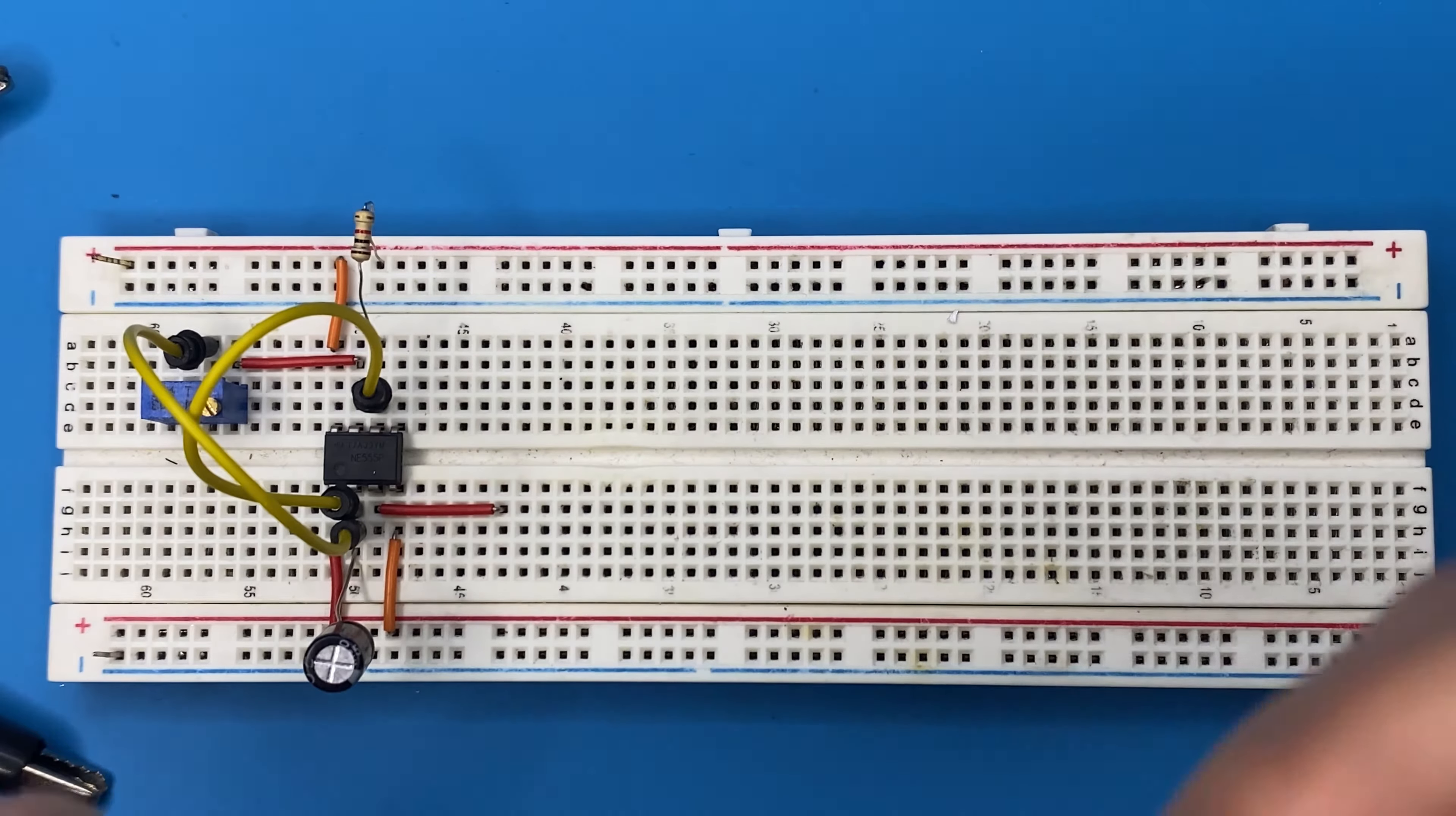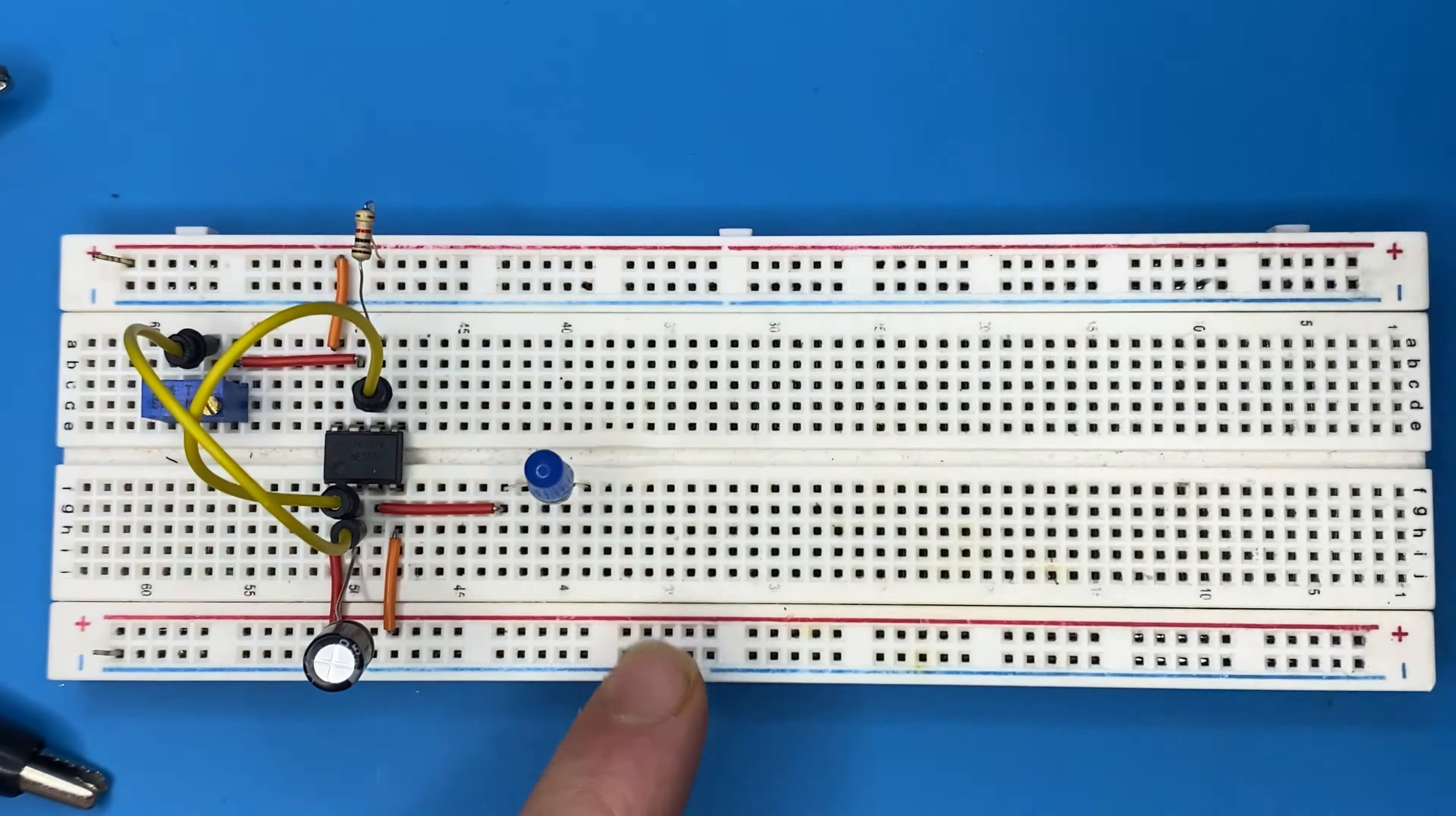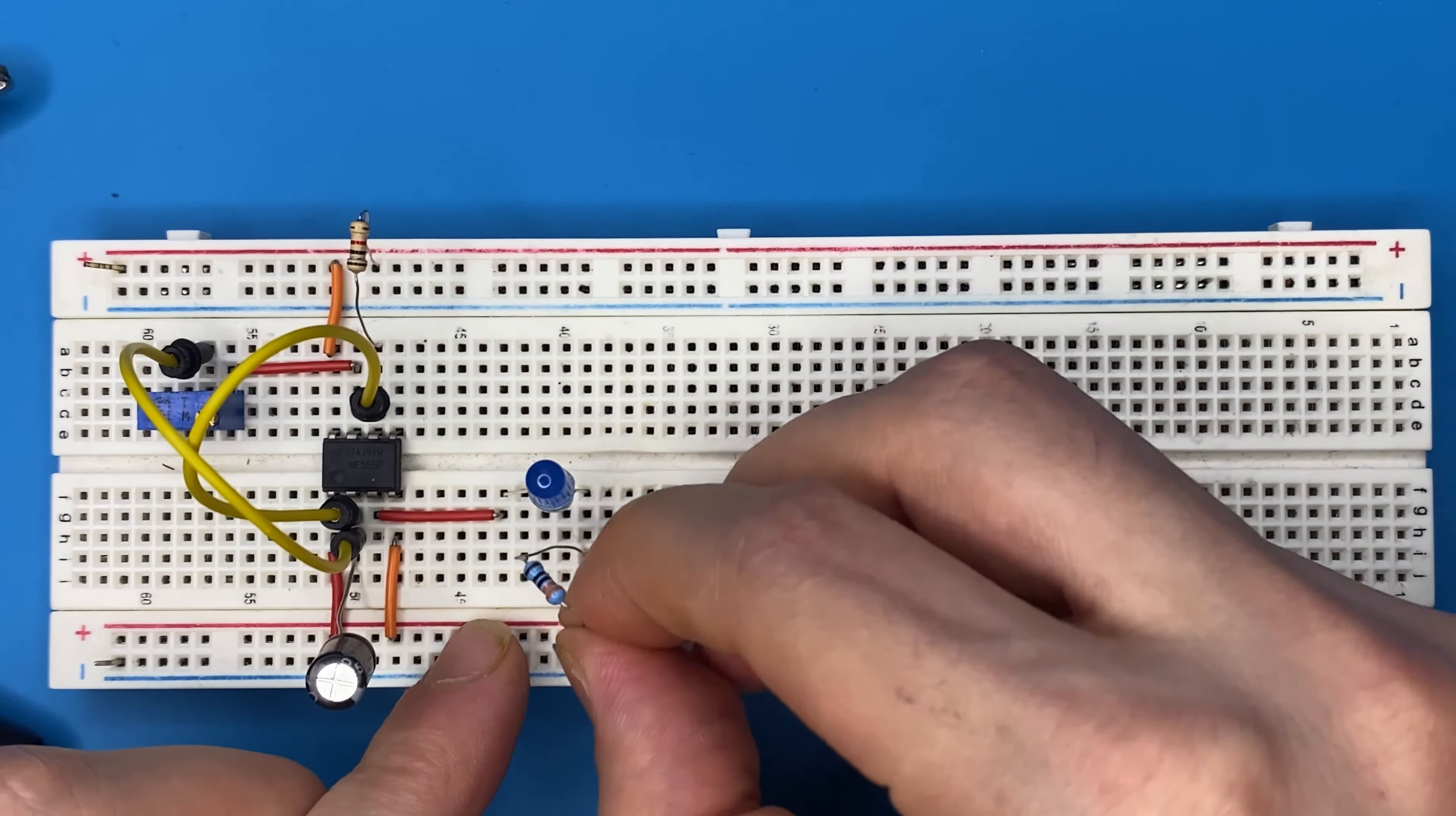Now let's connect the anode of the LED to the third pin of the IC, and the cathode is going to be connected to the ground using a 330 ohm current limiting resistor.